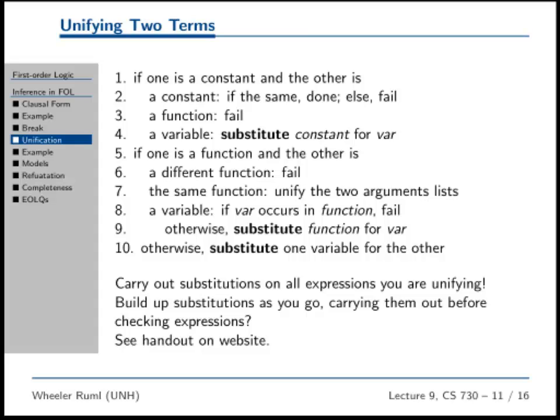You're doing this recursive descent along the term lists of both instances of the predicate, traversing both of their argument lists at the same time, trying to see if you can match them up.